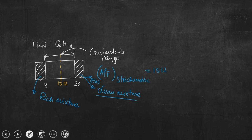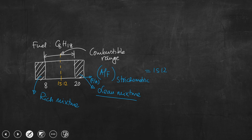In the rich mixture regime, combustion will be initiated by the spark plug, but the heat produced will be absorbed by the excess fuel present in the mixture and the flame will not sustain. Whether the air-fuel ratio is above 20 or below 8, in both regimes combustion will not sustain. The carburetor should be designed so that it provides an air-fuel ratio within the combustible range.